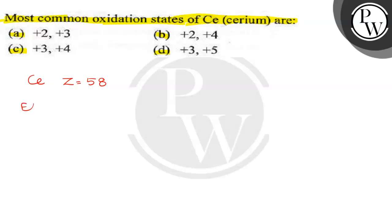So cerium electronic configuration, that is xenon - this is 54 - 4f¹, 5d¹, and 6s². This is the general electronic configuration of cerium.